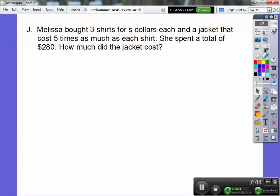Melissa bought 3 shirts for s dollars each, and a jacket that cost 5 times as much as each shirt. So this is 3s for the shirts, and the jacket is 5s. She spent a total of $280. Set this equal to $280: 3s plus 5s equals $280.